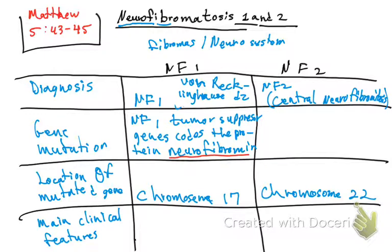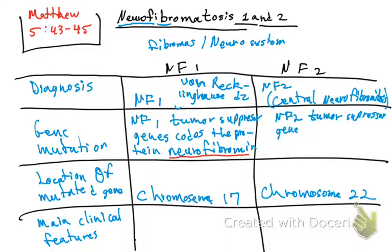For neurofibromatosis type 2, the NF2 tumor suppressor gene codes for the protein merlin.